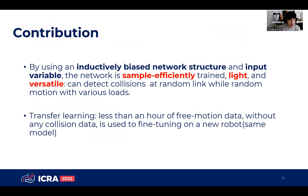Therefore, in this work, by using an inductively biased network structure and input variables, the network is sample-efficiently trained, lightweight, and versatile. It can detect collisions at a random link during random motion with various loads. For transfer learning, less than an hour of free-motion data without any collision data is used to fine-tune on a new robot.